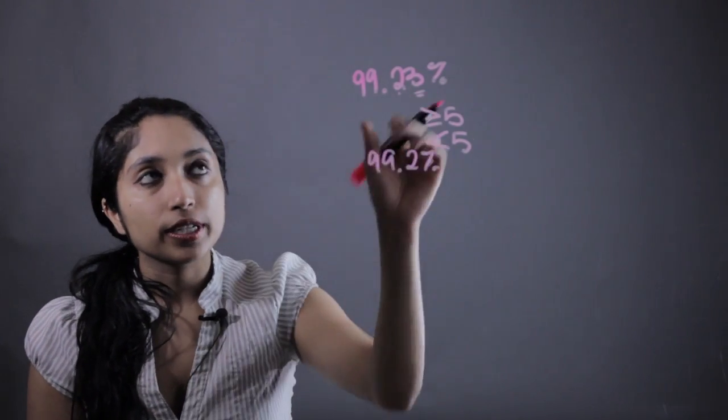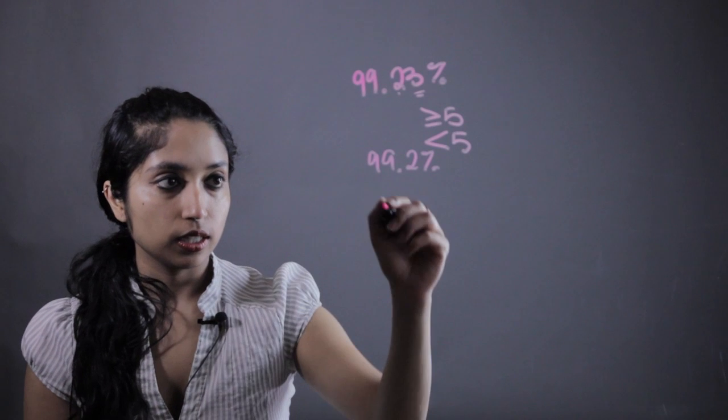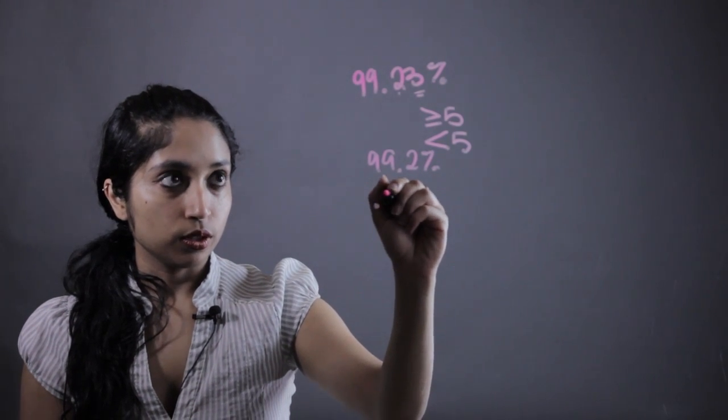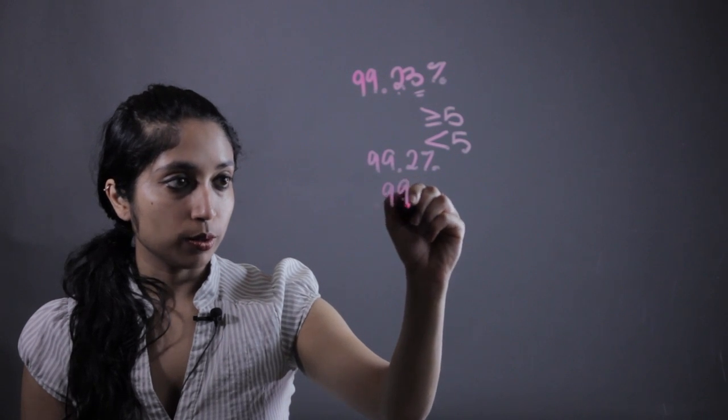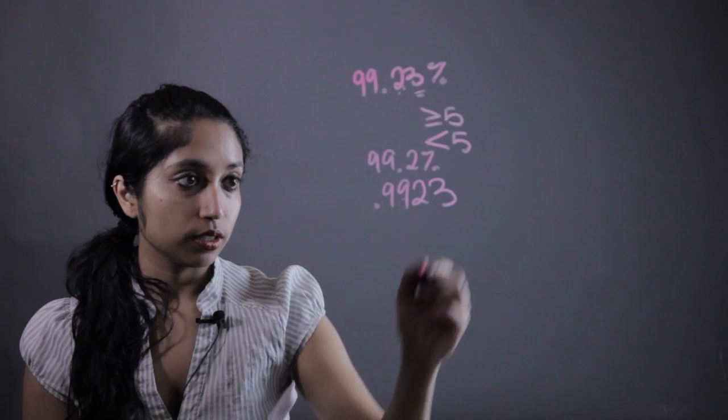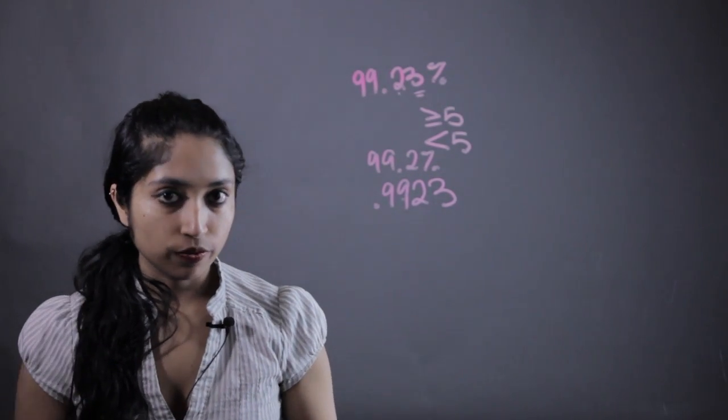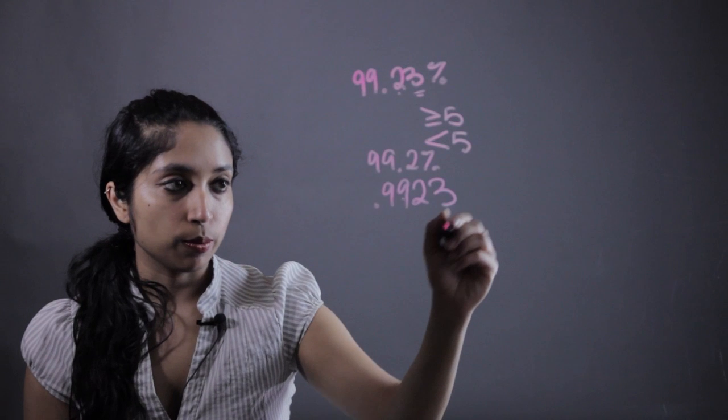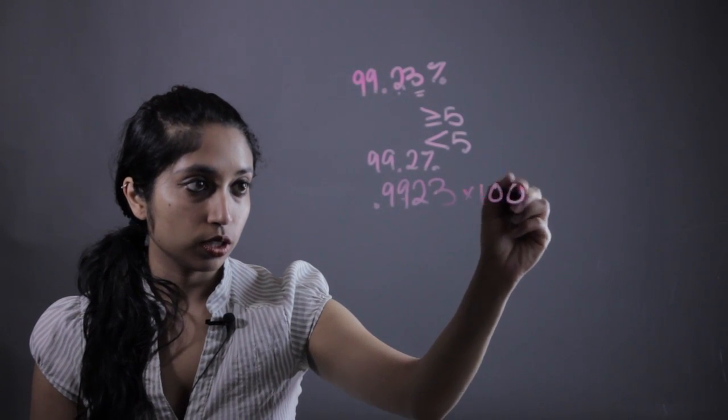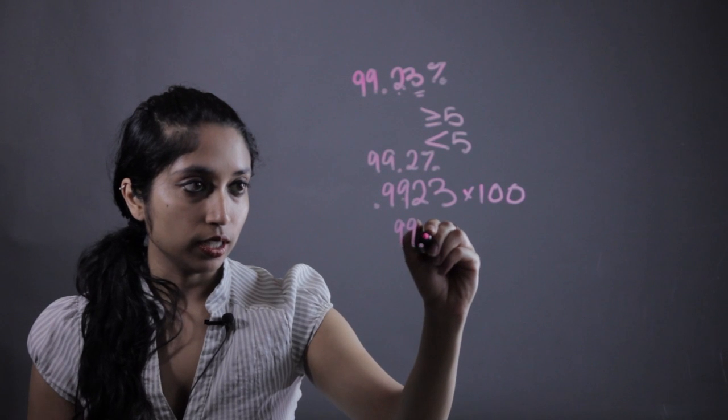a percentage. Now say they didn't give it as a percentage. Say they just gave you the decimal but told you it's a percentage and they hadn't converted it. What you want to do is simply convert it into the percentage by multiplying by 100 to get 99.23 percent, and then you round from there.